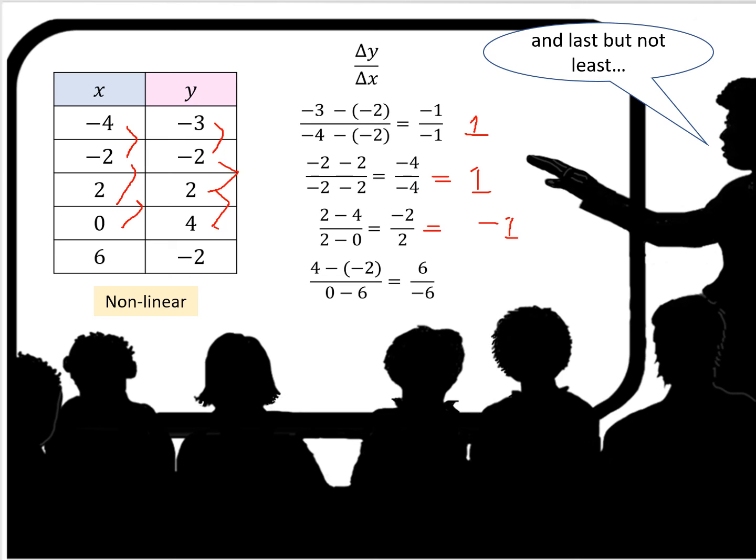And so we test the last one. Minus 4 minus 2, and 0 minus 6, and we get 6 over negative 6, which is also negative 1. So we can see that the rate of change between the points is not the same. Therefore, it is a nonlinear function.